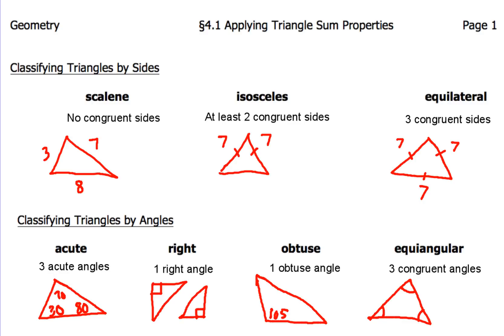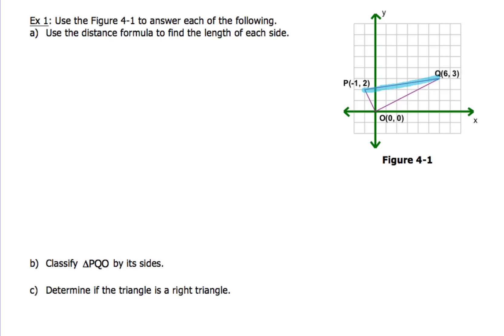Now we've got a lot to do here in example number one. Check out this bugger. This guy is long. We've got to use this figure 4-1 to answer each one of the following questions. For A, we've got to use a distance formula to find the length of each side. For B, we've got to classify the triangle by its sides. And C, we've got to determine the length of the right triangle. Wow, that's a lot of stuff. So let's take a look at this side PQ over here. We're going to use a distance formula and get after that one first.